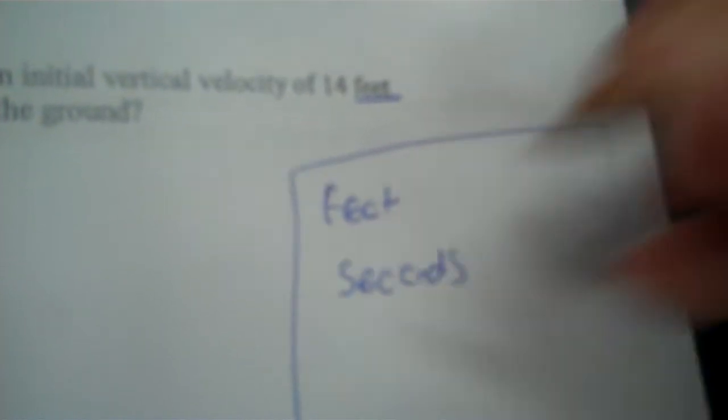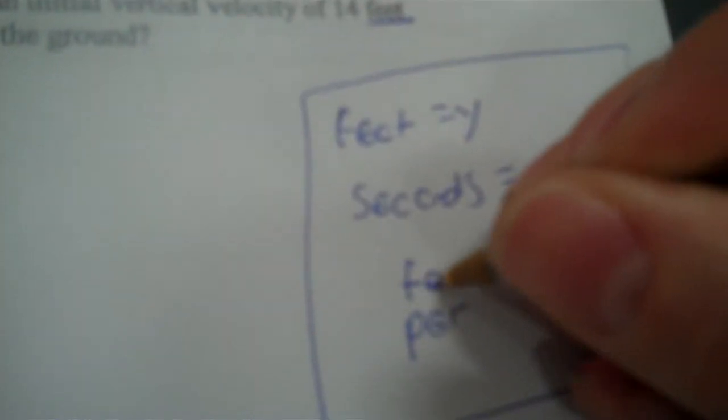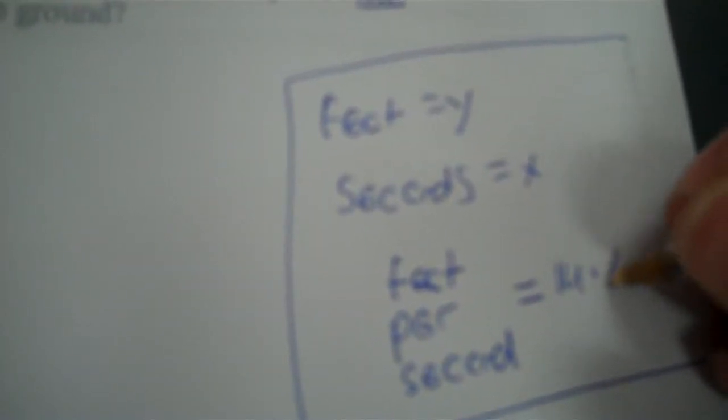Seconds is x, feet is y. The feet per second is 14. Now, you're not going to make a table because the armadillo does not just continuously go up for eternity — he goes up, but then he comes down. So it's impossible to make a table. You draw the path of the armadillo: he goes up, reaches a high point, comes down. This is known as a parabola.